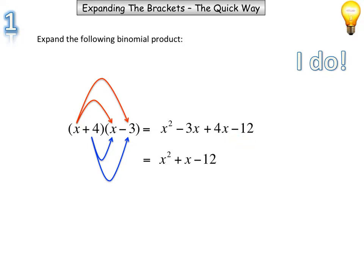We can simplify our two middle terms again to get positive 1x. So we have x squared plus 1x take away 12.